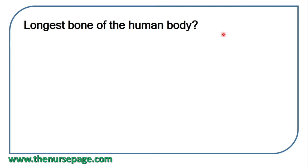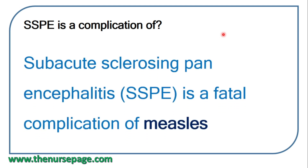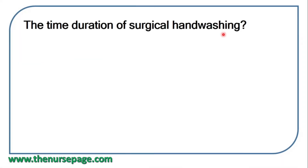Next question: the longest bone of the human body is the femur. Next question: SSPE — subacute sclerosing panencephalitis — is a fatal complication of measles. The duration of surgical hand washing is 5 to 10 minutes.